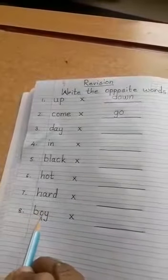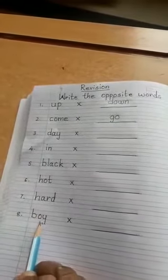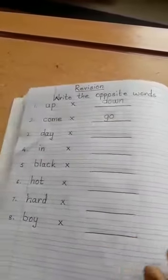And the last one is boy. The opposite of boy is girl. You are going to write the girl spelling. G-I-R-L.